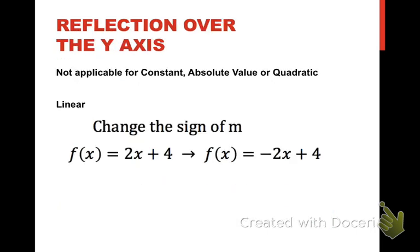Next comes reflection over the y-axis. This is not applicable for constant. It is some sort of applicable for absolute value or quadratic, but we're not going to get into that. So for linear, whenever you're reflecting across the y-axis, you're just going to change the sign of m. So I have one linear function over here on the left, 2x + 4. If I want to reflect that over the y-axis, I just change that slope, that sign of my m, to negative 2.